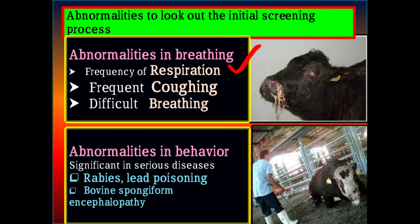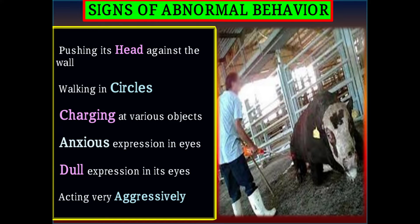Abnormalities in behavior are observed in significant and serious diseases including rabies, furious and aggressive behavior, lead poisoning, and bovine spongiform encephalopathy. Signs of abnormal behavior include pushing the head against the wall, walking in circles — commonly called circling disease, which may occur in listeriosis, rabies, or any disease affecting the central nervous system — charging at objects, anxious expression in the eyes as seen in rabies, and dull expression in the eyes.